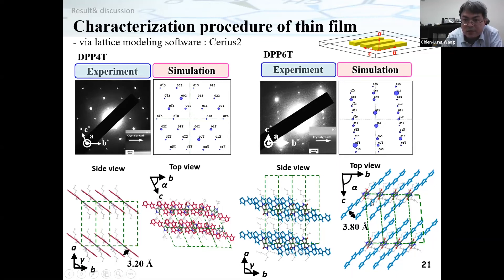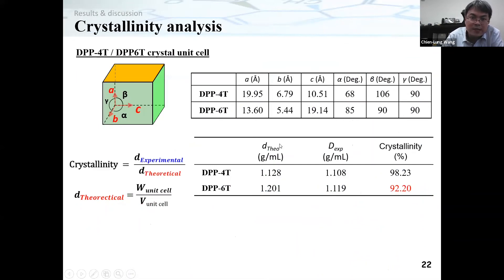At this point, we concluded that understanding the packing structure alone is not sufficient to explain why the longer conjugation length molecule gives lower mobility. So we further performed density analysis to calculate the crystallinity of both types of crystals. Using the lattice parameters, we calculated the theoretical density of each crystal, and then measured the experimental density to calculate crystallinity.